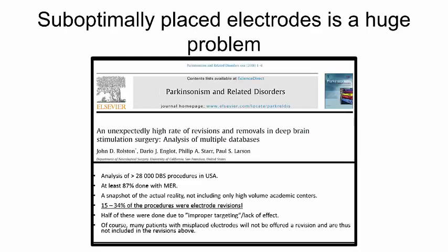Let us start with the background. This was also mentioned in the course Targeting and Stereotactic Functional Neurosurgery, but it is worth repeating. Suboptimally placed electrodes is today a huge problem. In this recent study of more than 28,000 DBS procedures in the USA, up to 34% of the procedures were identified as electrode revisions, most often due to improper targeting and lack of effect.